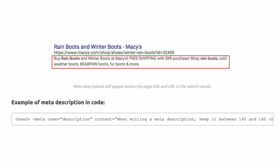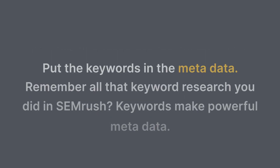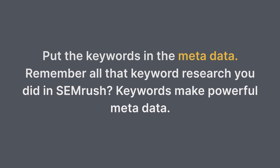Invest a few minutes and make the description fields work. That headline might be great, but when it defaults as the meta title it can be too long — trim the fat. Aim for 50 characters for the meta title and 150 for the meta description. Be crisp, get the essentials in and nothing more. Of course, put the keywords in the metadata.